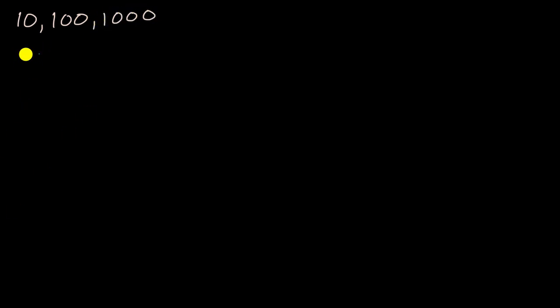In this video, we're going to think about what happens when we multiply or divide by 10, 100, or 1,000. So let's just start with an example. Let's say we want to figure out what 237 times 10 is.